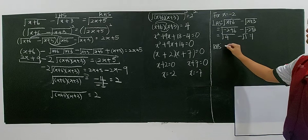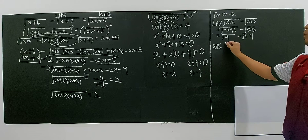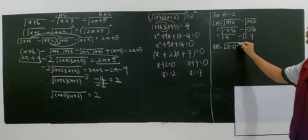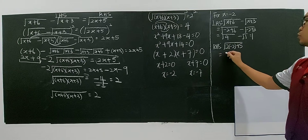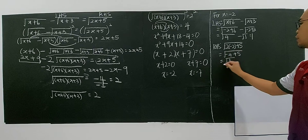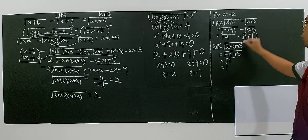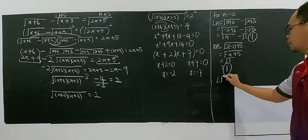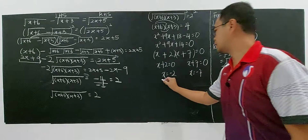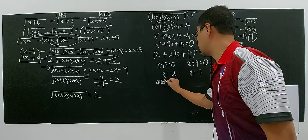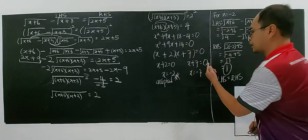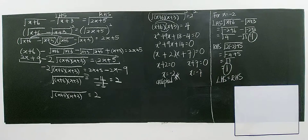The left hand side equals 1 and the right hand side equals 1. They are the same, so x equals negative 2 is accepted as a solution. Now you also need to double check x equals negative 7.